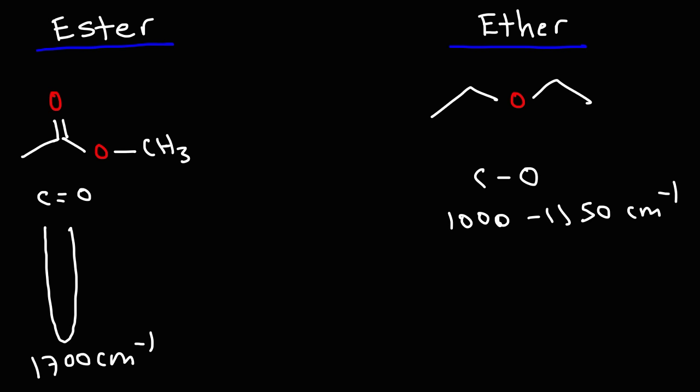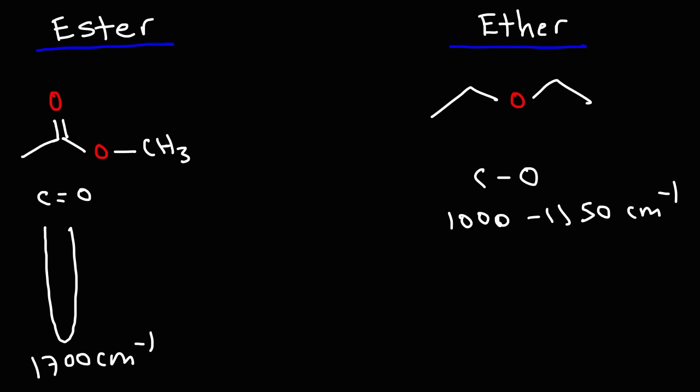Something to keep in mind is that double bonds have higher wavenumbers than single bonds. The C=O stretch absorbs at a higher energy than the CO stretch of an ether, and triple bonds have even higher wavenumbers than double bonds — we'll talk more about that later in this video.